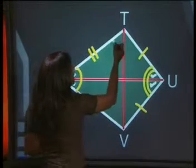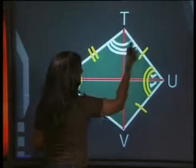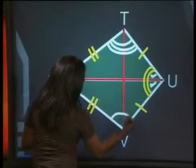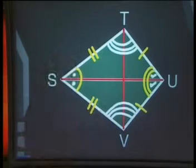And we know that the whole of angle T, let's mark it differently, we've got 3, is equal to the whole of angle V.